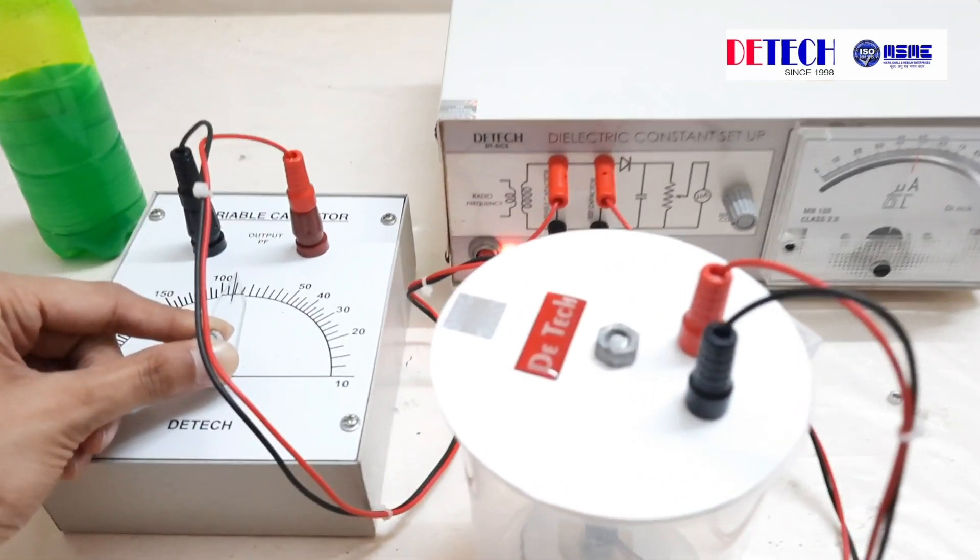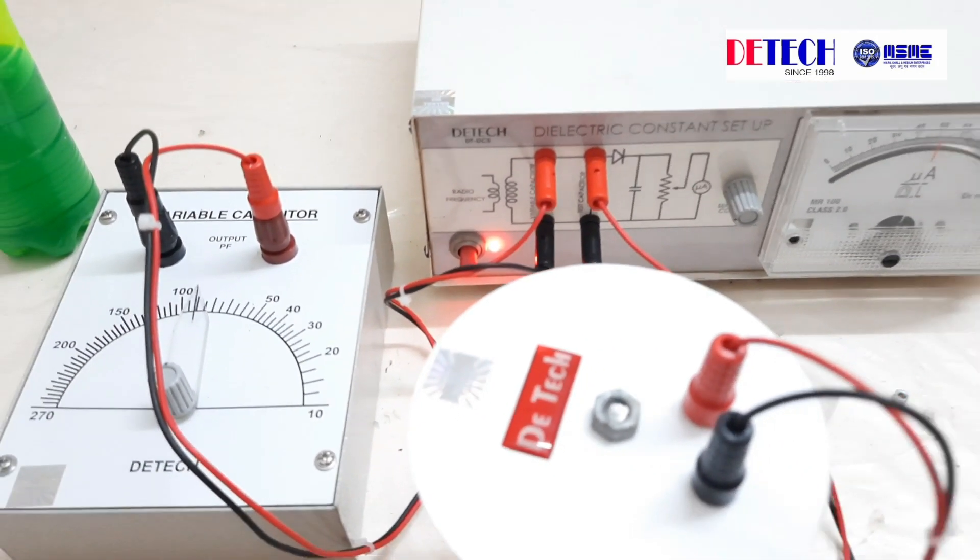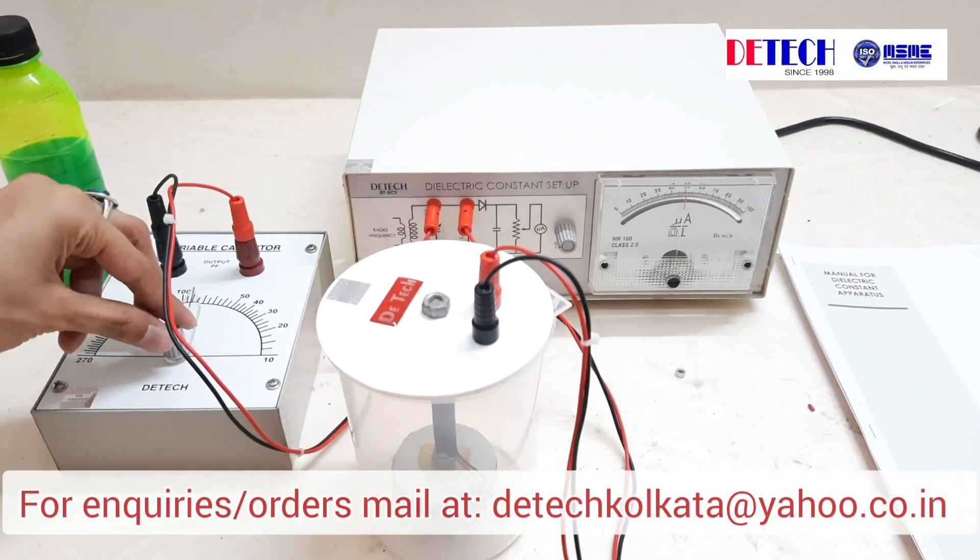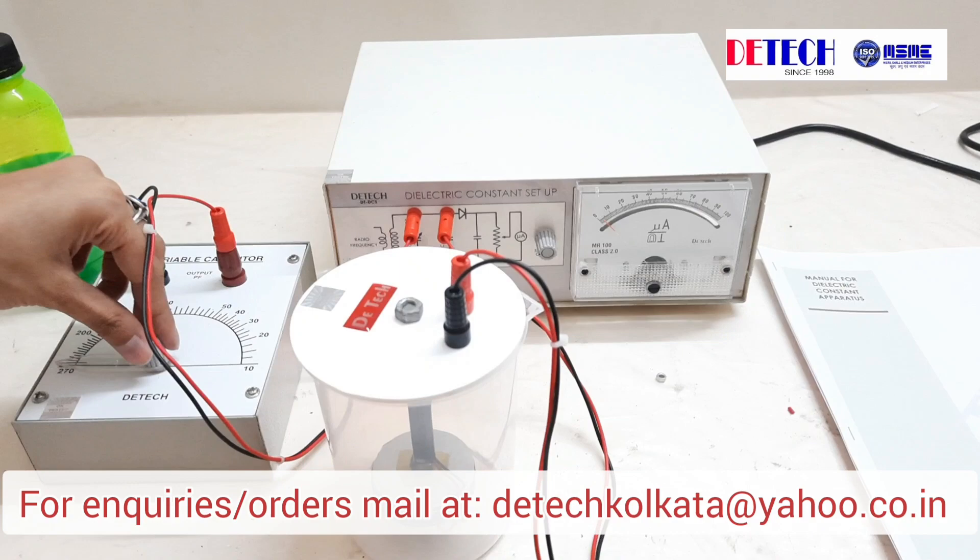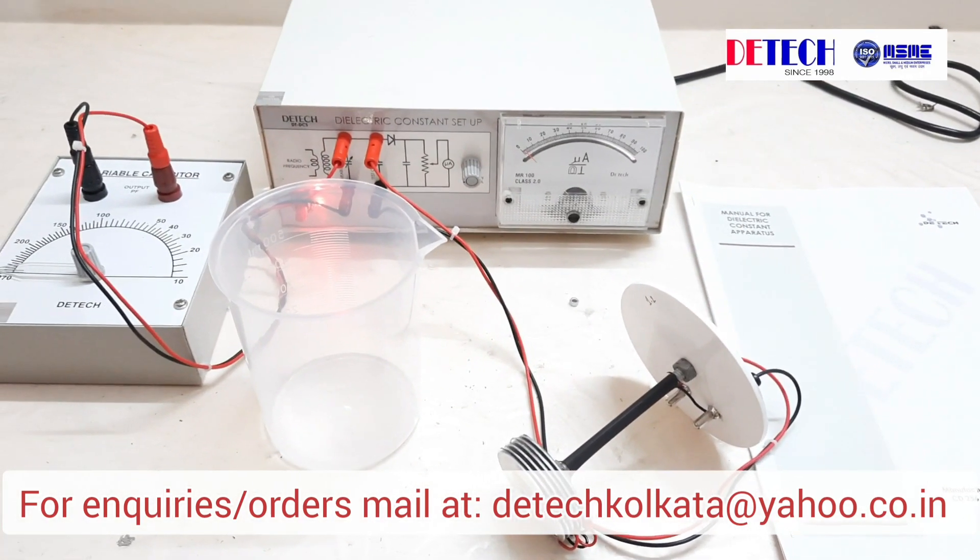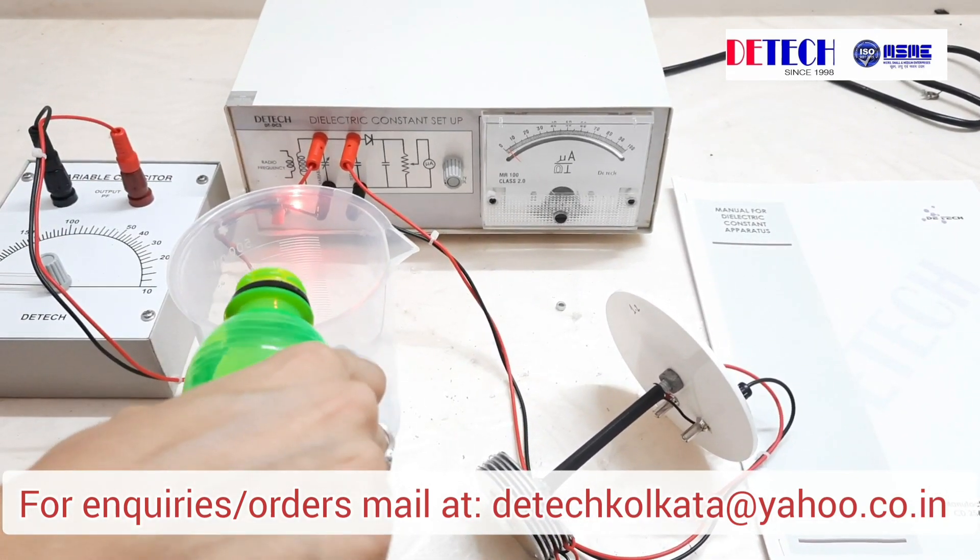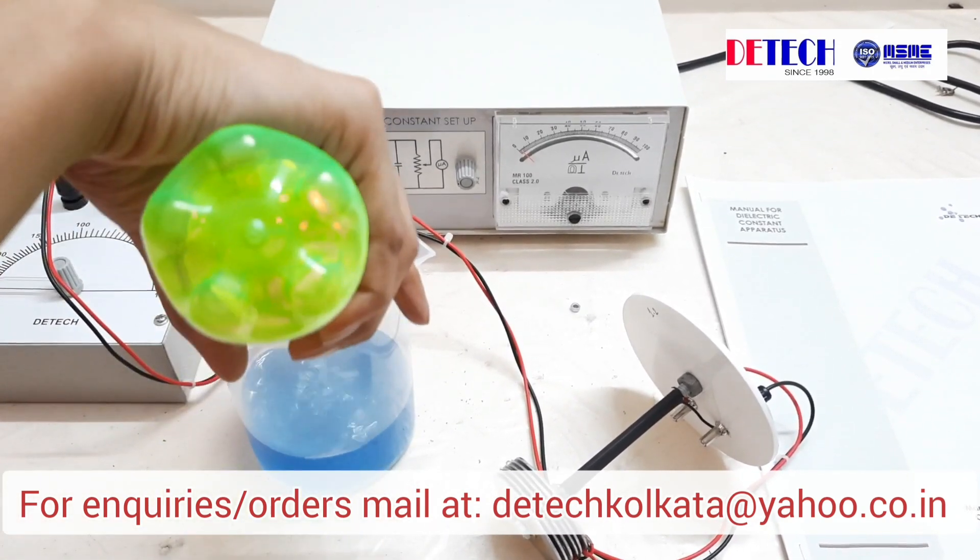So that is our value. We are getting 90 picofarad. Now we'll pour the liquid, let it rest for a few seconds, and then take the measurement again for the value of C2. Here we have kerosene as a dielectric medium.